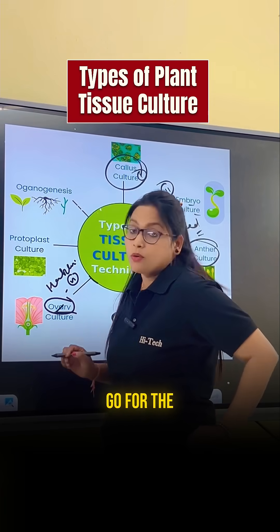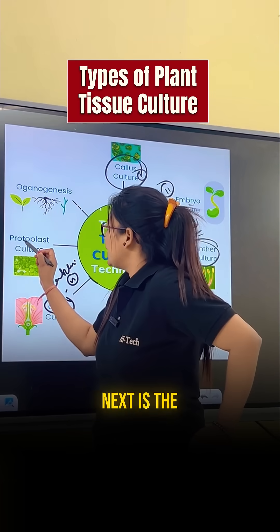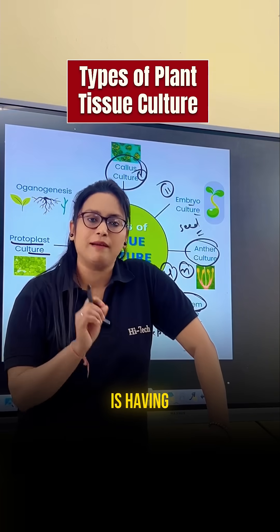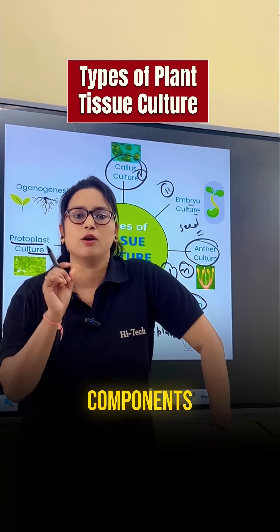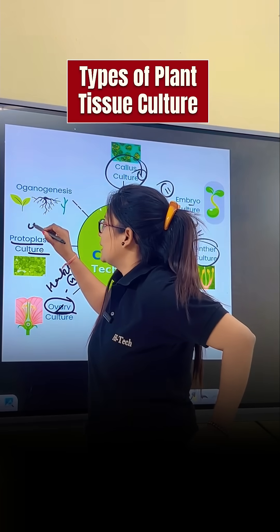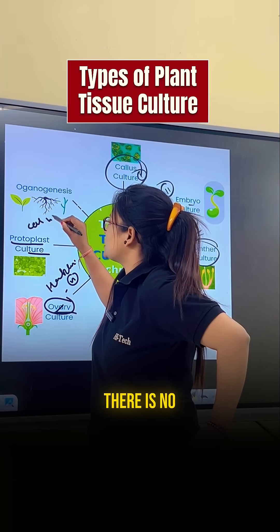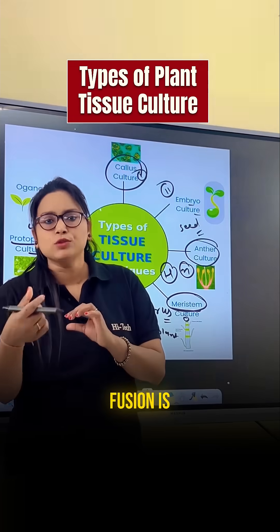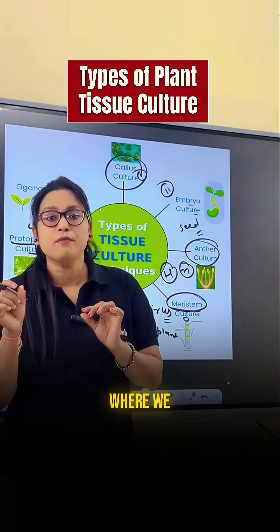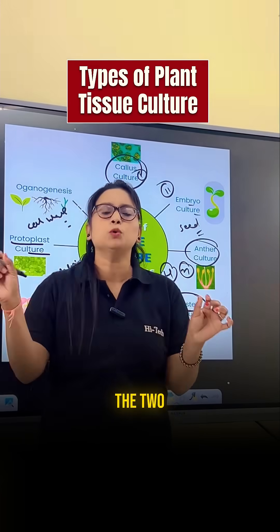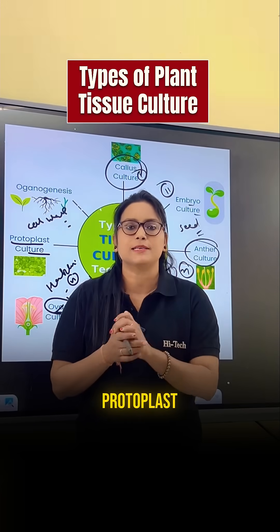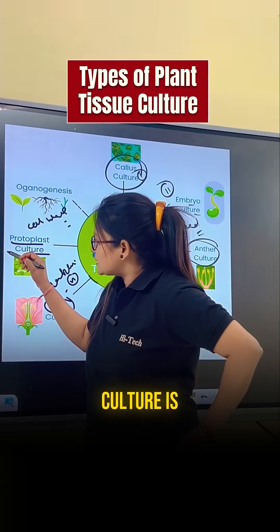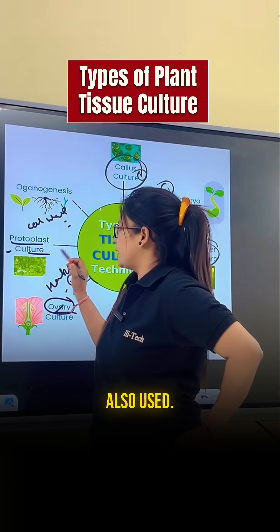Next is protoplast culture. The protoplast contains all the cell components except the cell wall — there is no cell wall. Protoplast fusion is a term where we fuse two different protoplasts from two different plant species. Protoplast culture is also an important type of plant tissue culture.